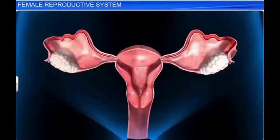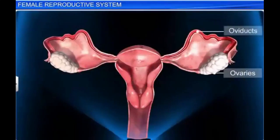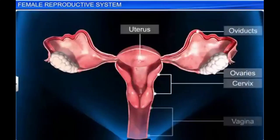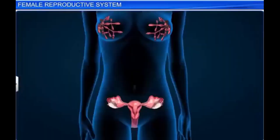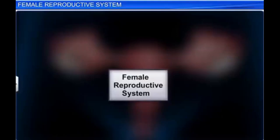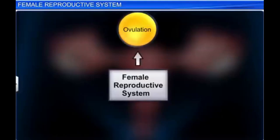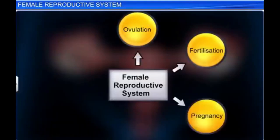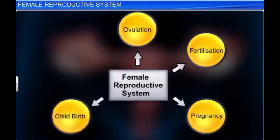The female reproductive system includes the ovaries, oviducts, uterus, cervix, vagina, and the external genitalia located in the pelvic region. Along with a pair of mammary glands, it supports the process of ovulation, fertilization, pregnancy, childbirth, and child care.